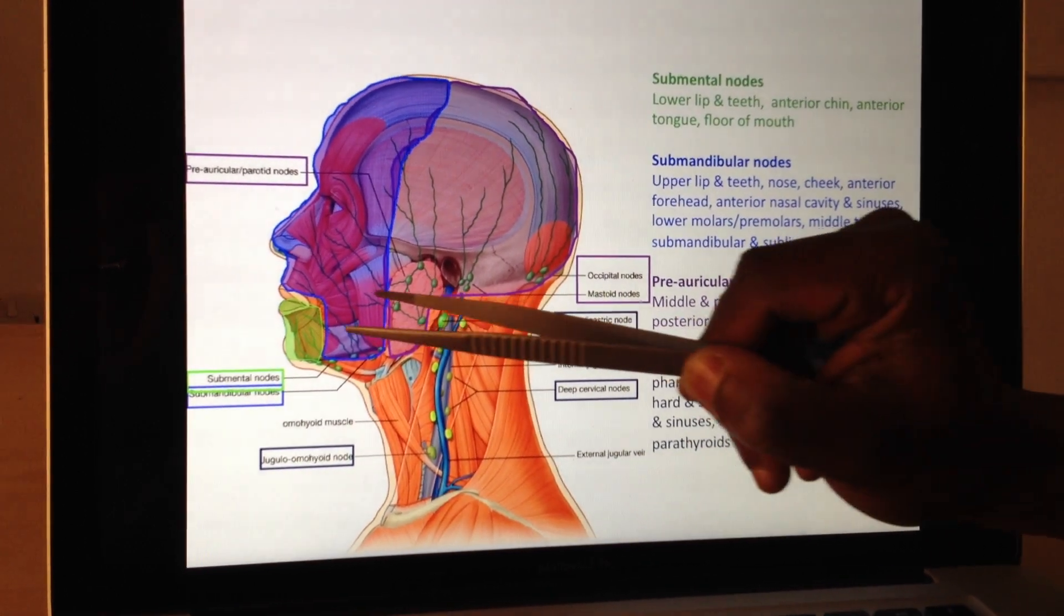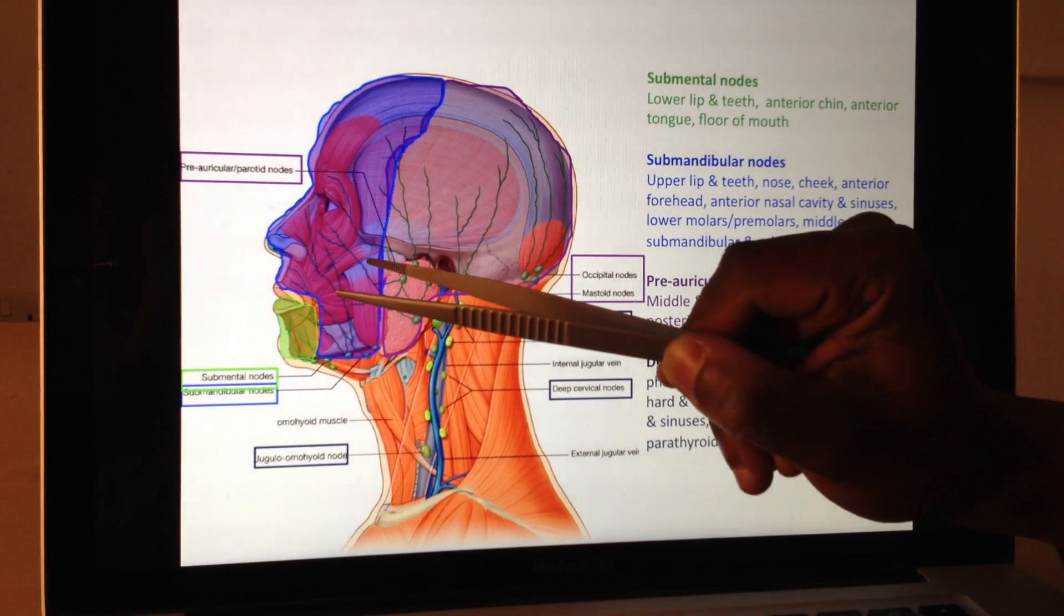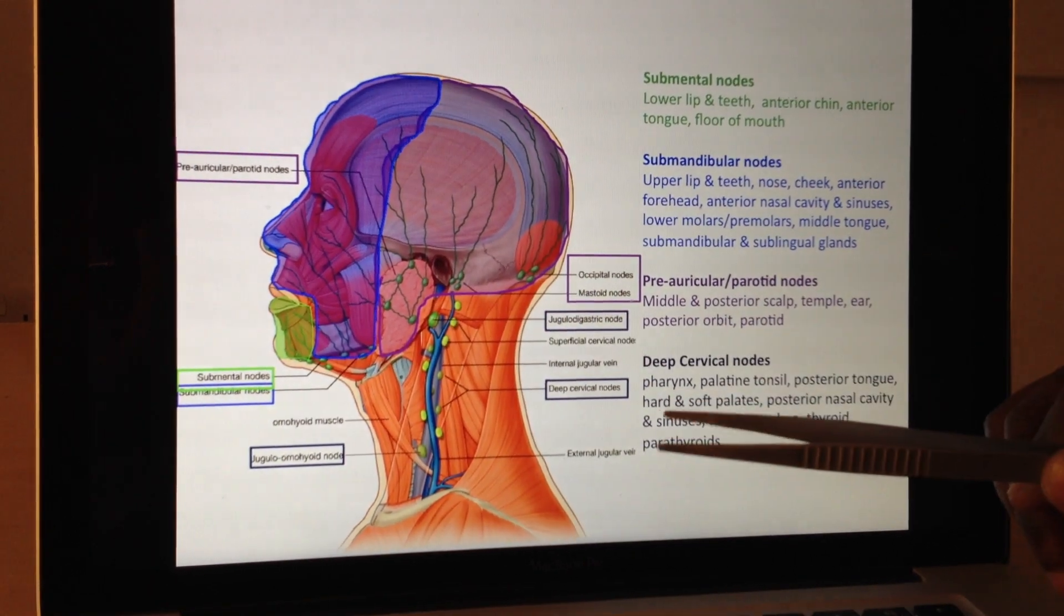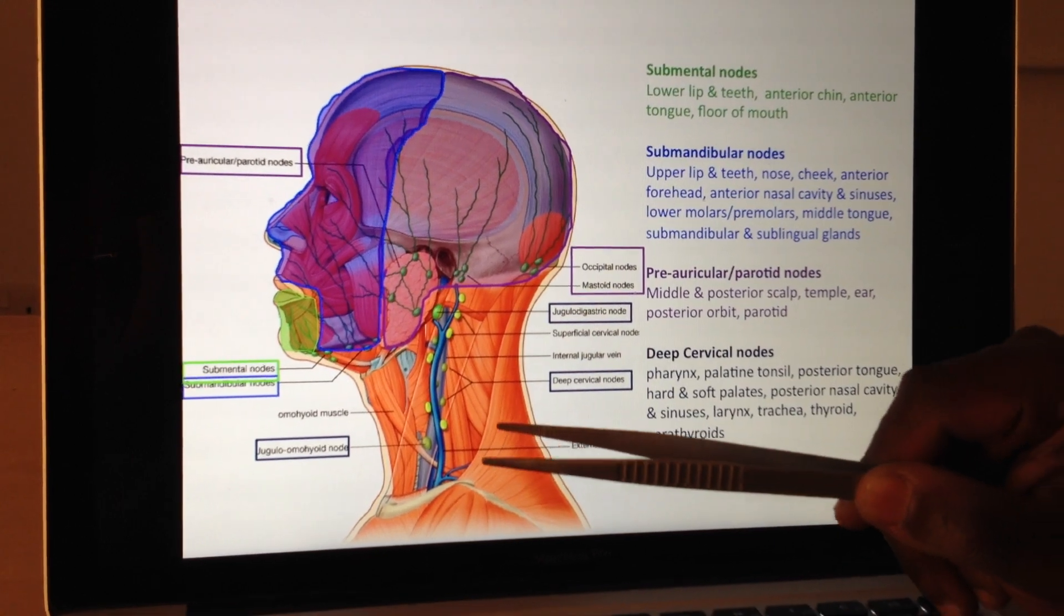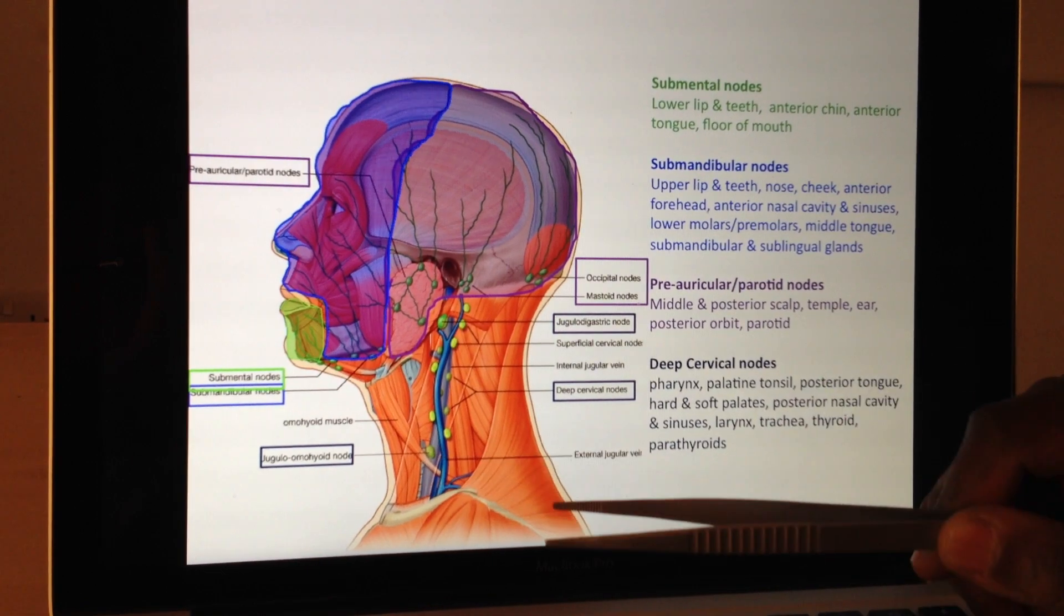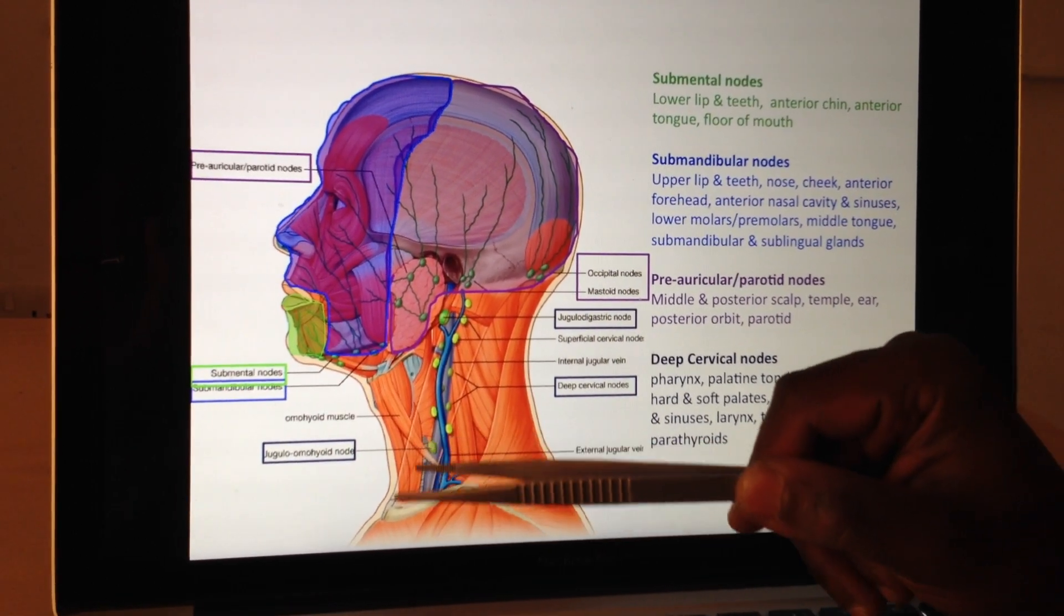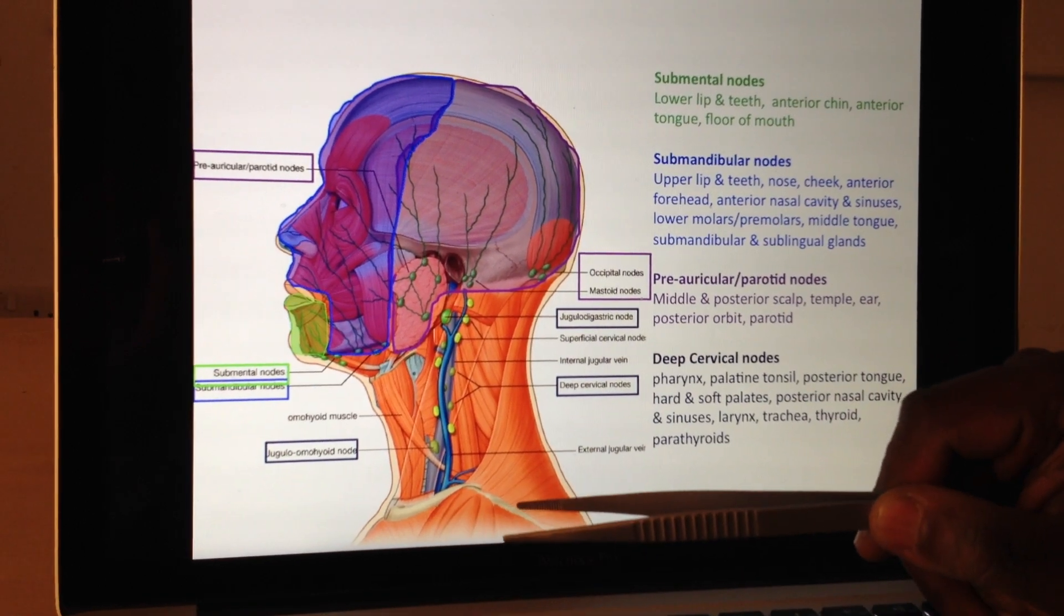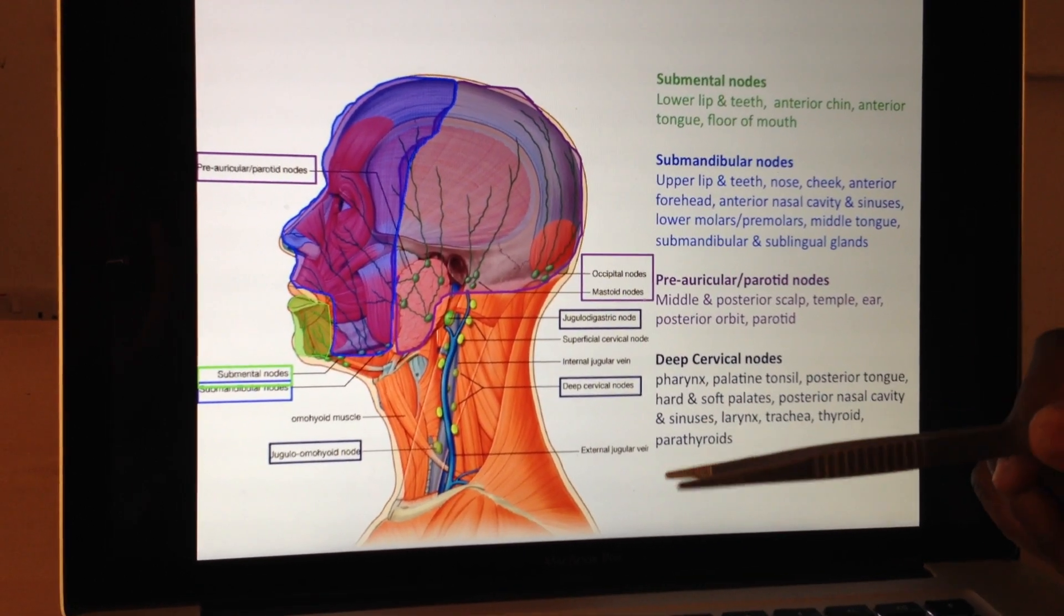The hard and soft palates, which forms the roof of the mouth. The posterior nasal cavity, so we're heading to the back of the nose where it's going to join onto that pharynx. And also the sinuses. And then the larynx, so we're heading down towards the laryngeal area here. And also the trachea, which is the windpipe. The thyroid gland, and also the parathyroid glands, which are associated with the thyroid, para meaning parallel.